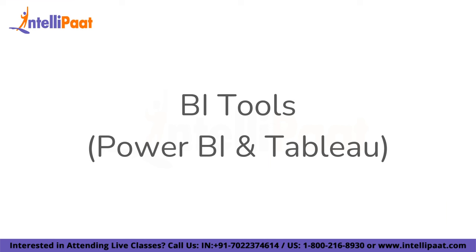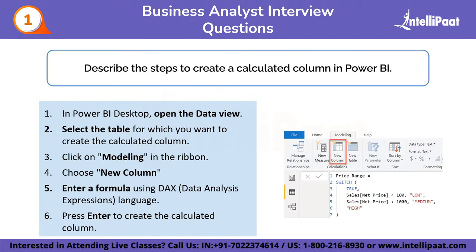Now let's look at BI tools questions, covering Power BI and Tableau. The first question is: describe the steps to create a calculated column in Power BI. First, open Power BI Desktop and go to the data view. Second, select the table for which you want to create the calculated column. Third, click on Modeling in the ribbon. Fourth, choose New Column. Fifth, enter a formula using DAX — Data Analysis Expressions language. Finally, press Enter to create the calculated column.